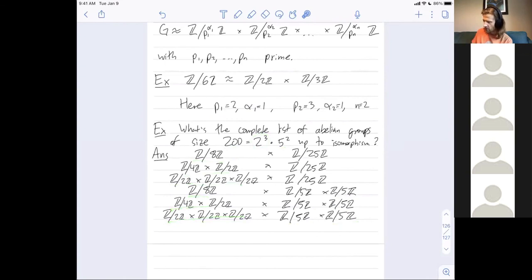And you pair that with all the ways to write down abelian groups of size 25, which there are 2, right? So here we ended up getting 6 different isomorphism classes.